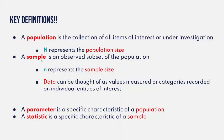Now we're going to introduce two topics: a parameter and a statistic. A parameter is a specific characteristic of a population — parameters are taken or calculated from a population, from complete information. Generally in this class, parameters are going to be represented by Greek letters. We'll use mu and sigma a lot, but that'll come a little bit later.